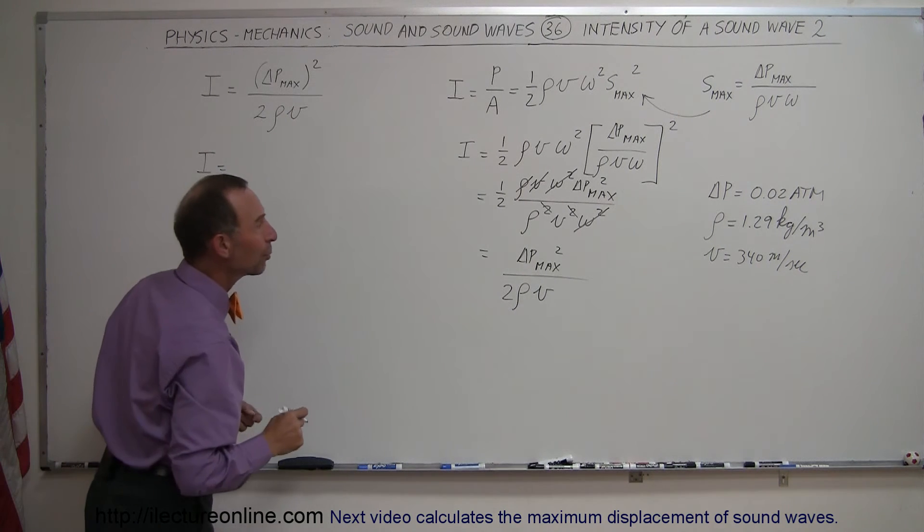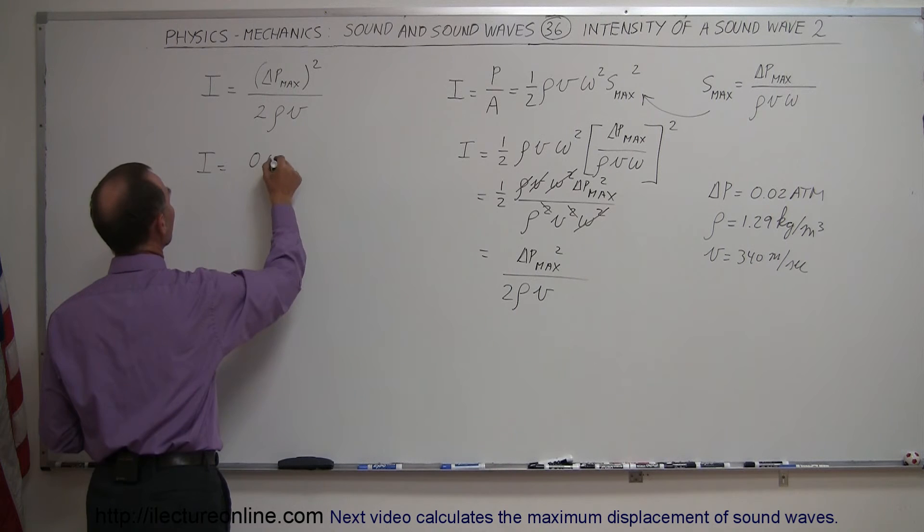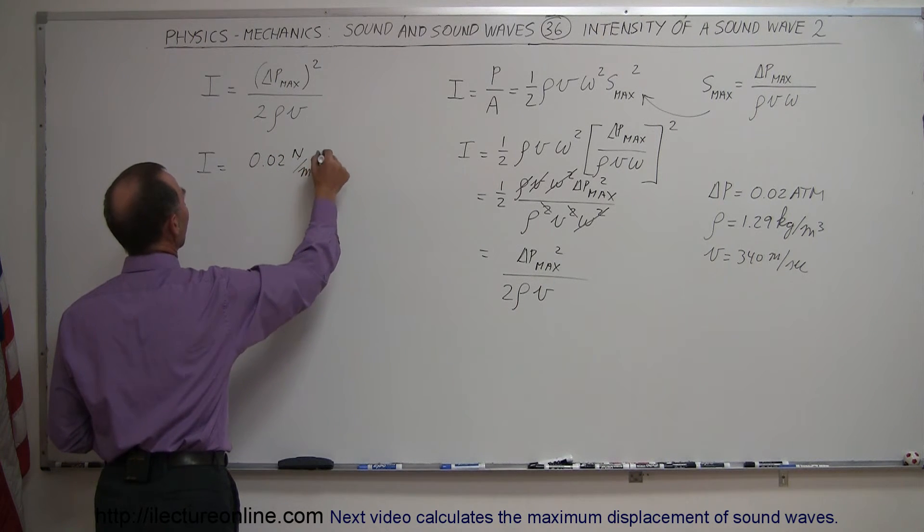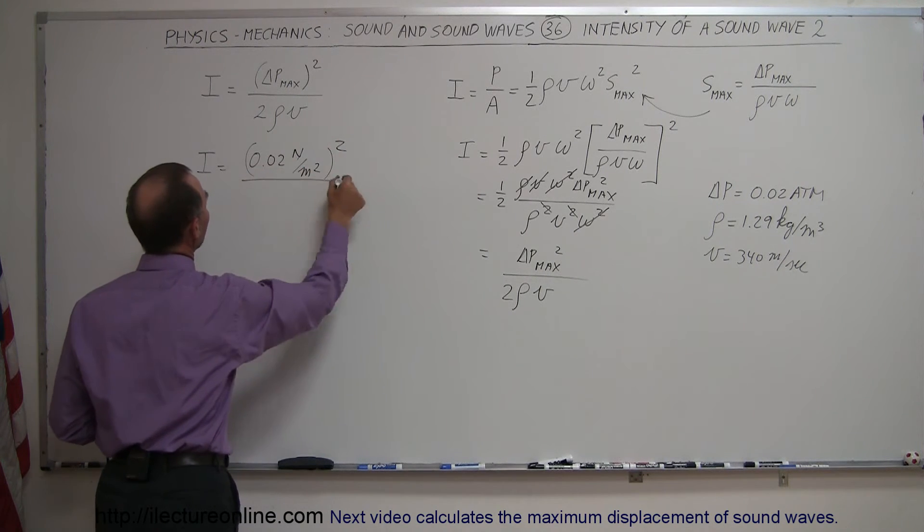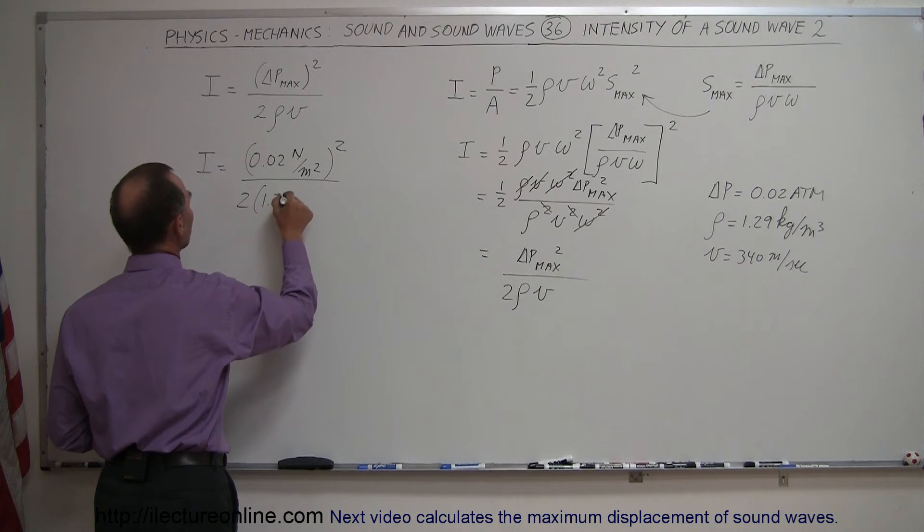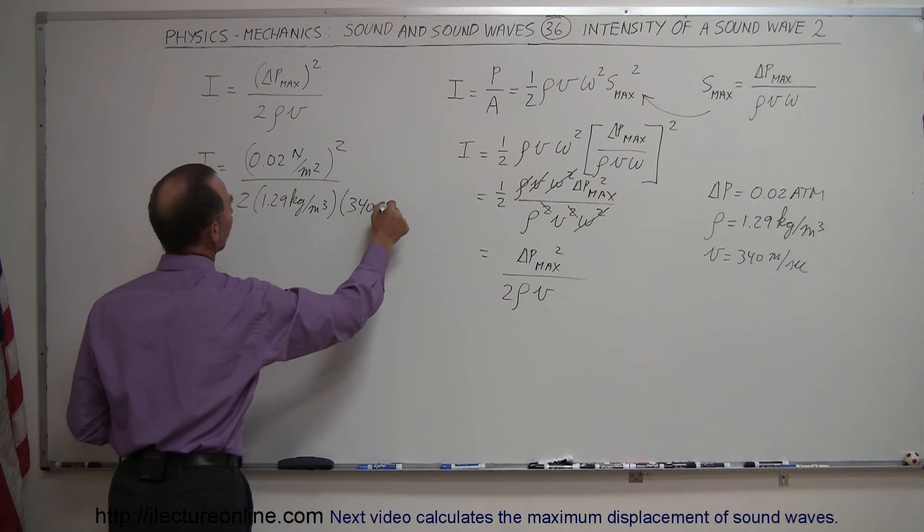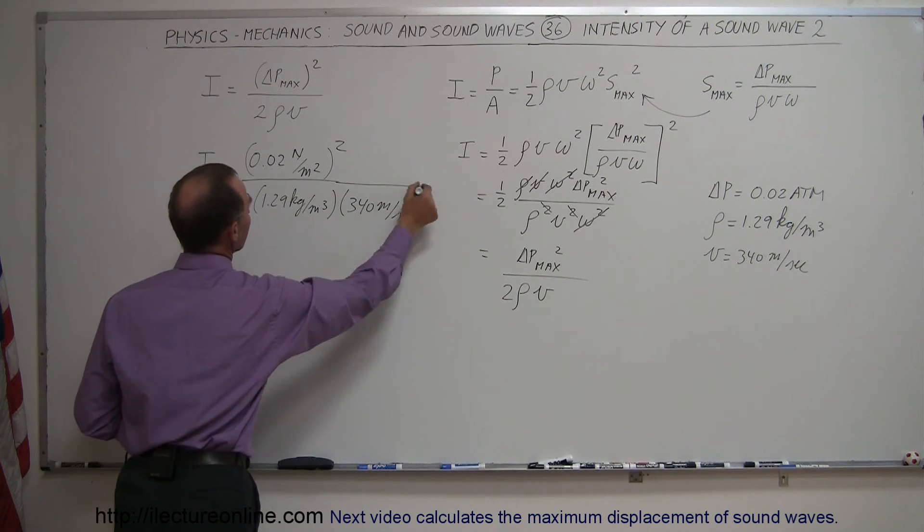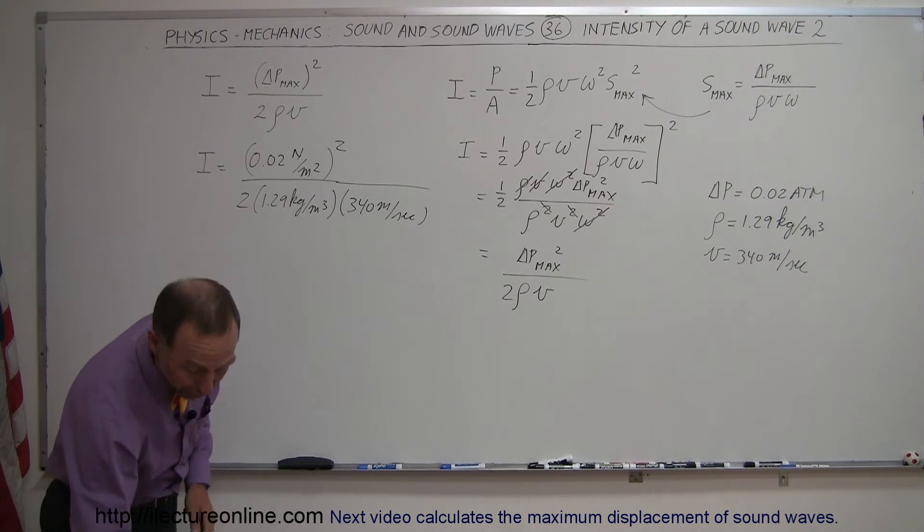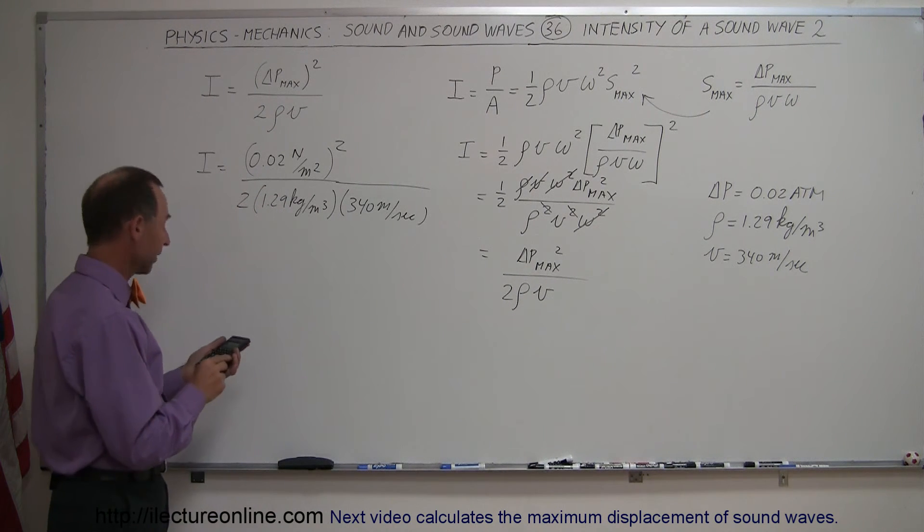So we take the pressure difference of 0.02 newtons per square meter, we have to square that, divide that by two times the density, 1.29 kilograms per cubic meter, times 340 meters per second, and simply enough with that we should be able to figure out the intensity.